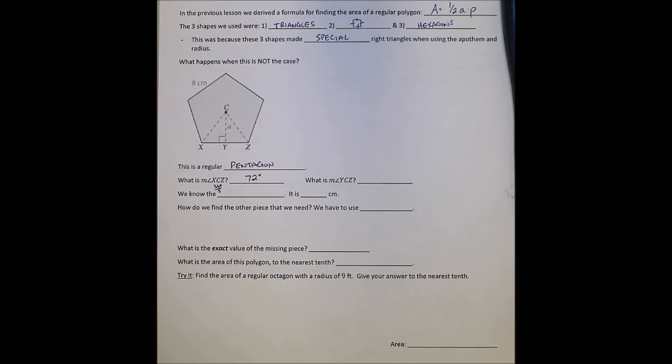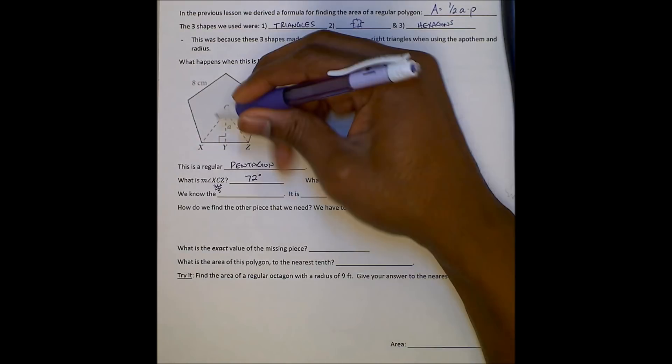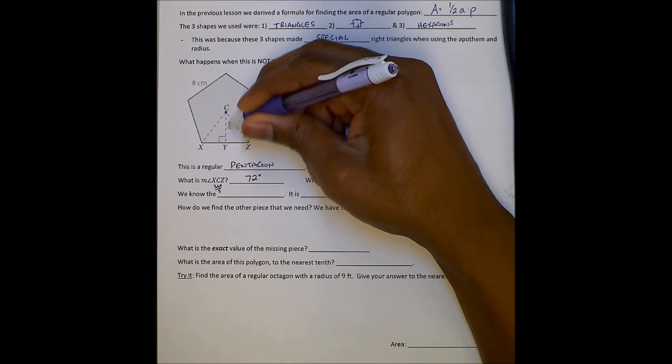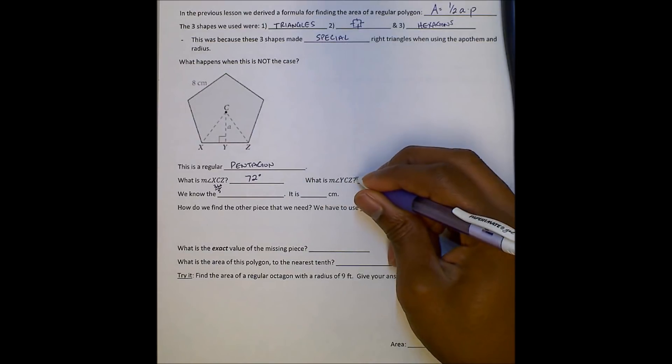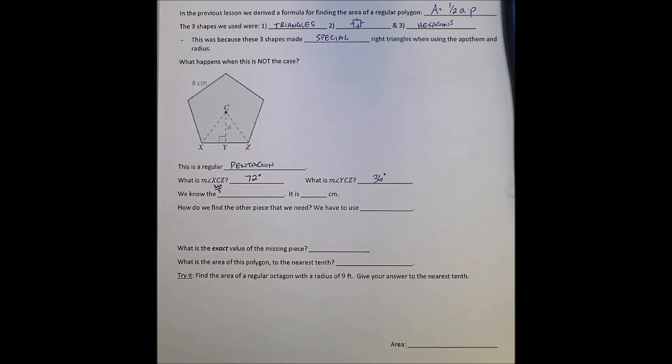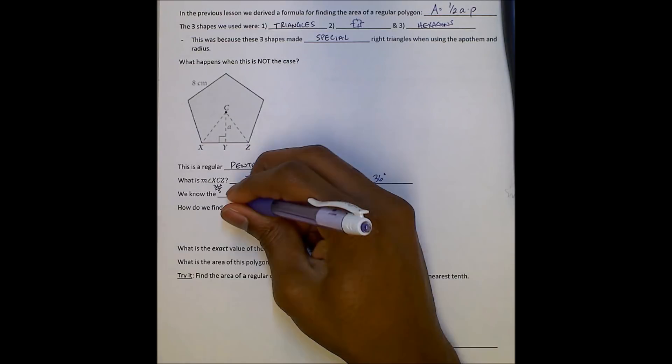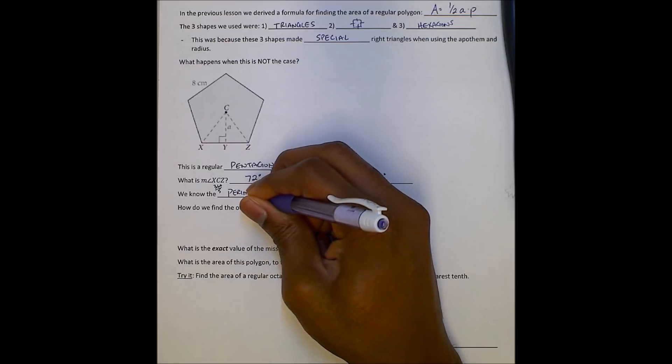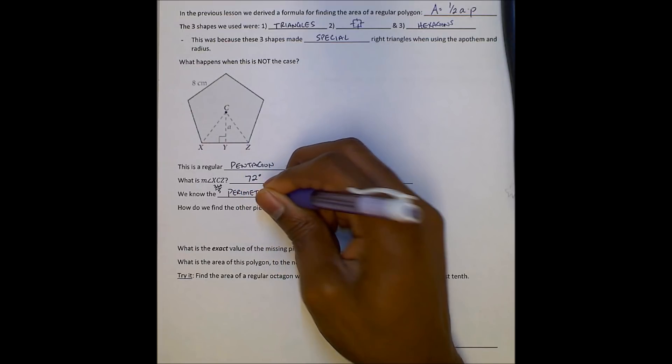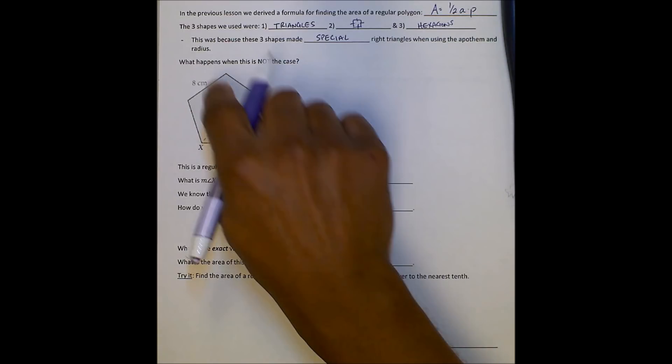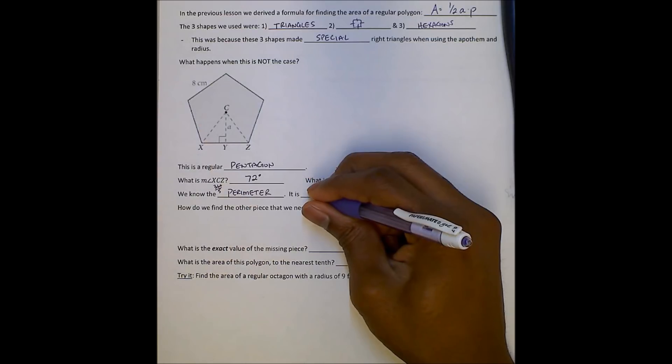And that will give us 72 degrees. And then angle YCZ here, that will be half of that central angle, which is 36 degrees. We know the perimeter. Perimeter, that's a big part of our equation. And that's going to be 8 times 5, or 40 centimeters.